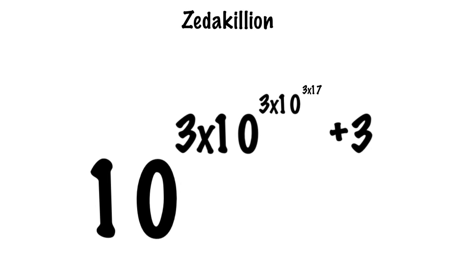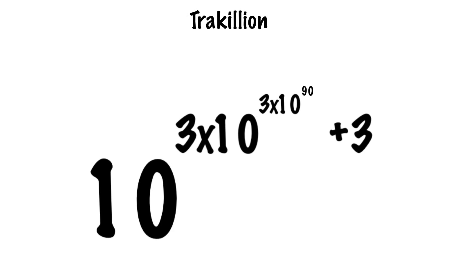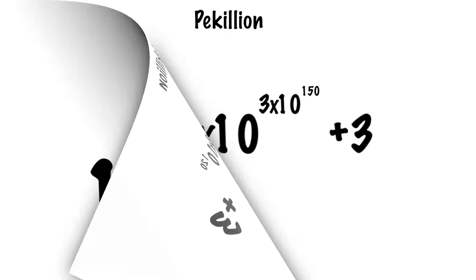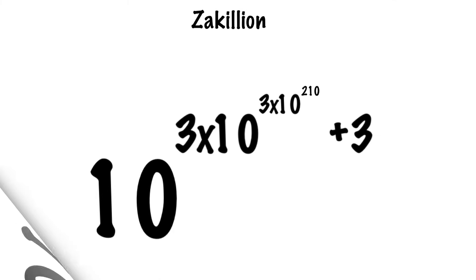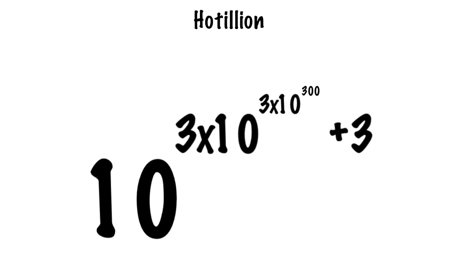So Zedakilion, for example, corresponds to a 51 in the top exponent, which is 3 times 17. Once you go past Netakilion — which corresponds to 3 times 19 in the top exponent — you'll start going through the 20s, and then you hit Trakilion, which starts off the 30s. Once you've gone all the way up through the 30s, you'll be in the 40s, then the 50s, and the 60s. You can tell by looking at the top exponent and dividing it by 3, until you get to 1 Htillion. 300 divided by 3 is 100, so Hti corresponds to 100.